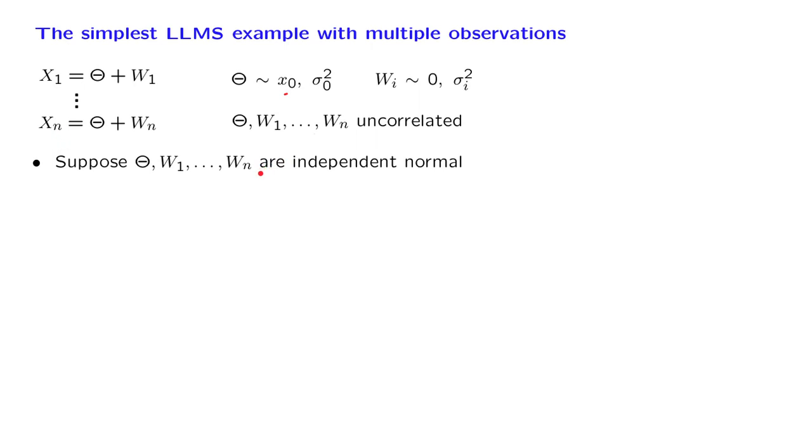Let us suppose, in addition, that these random variables were not just uncorrelated, but independent, and that they happened to be normal random variables.